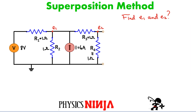I've set up the circuit here. I've given values, so all the resistors are going to be 1 ohm resistors. Our constant voltage source here is 8 volts, and our constant current source puts out 6 amps. I've grounded it, so we have 0 volts down over here. The goal is going to be to find these potentials, E1 and E2, at the two different nodes.